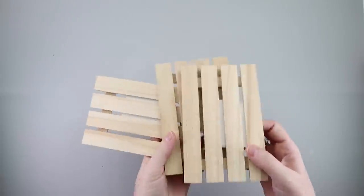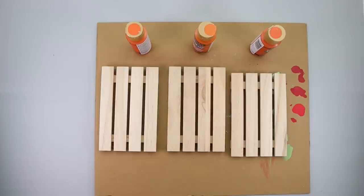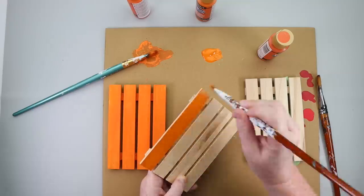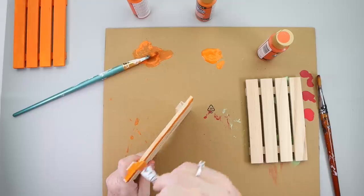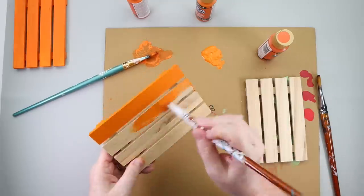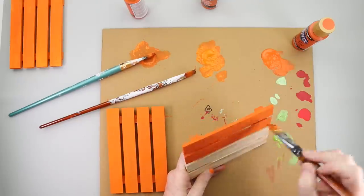Grab three of these mini palette signs from Dollar Tree and three different shades of orange paint. The first palette sign is getting painted with the color Jack O' Lantern by DecoArt. The second one is the color Spiced Pumpkin by DecoArt. And the last mini palette sign is getting painted with Canyon Orange by DecoArt.